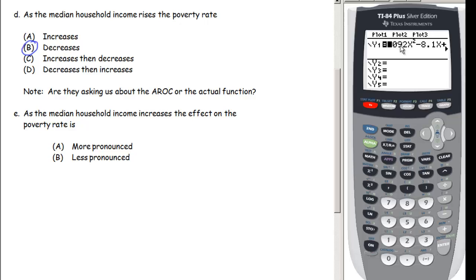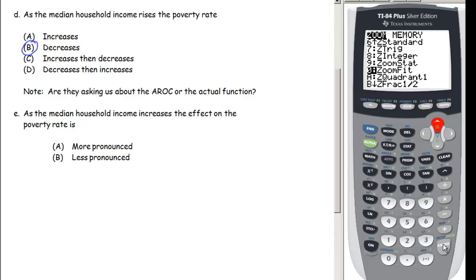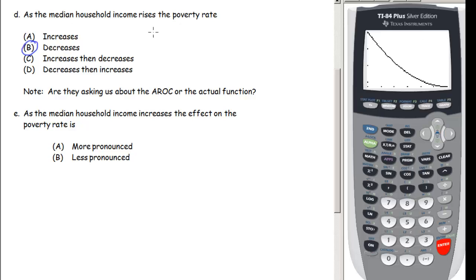To see this on the calculator: with the function in Y1, set the window with X min = 38, X max = 44, X scale = 1, then use Zoom Fit (option 0) to automatically set Y min and Y max. Looking at the graph: as X gets bigger — as median household income rises — the Y values, which represent the poverty rate, get smaller. So the poverty rate is decreasing.